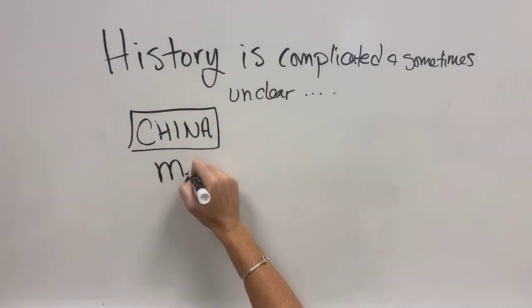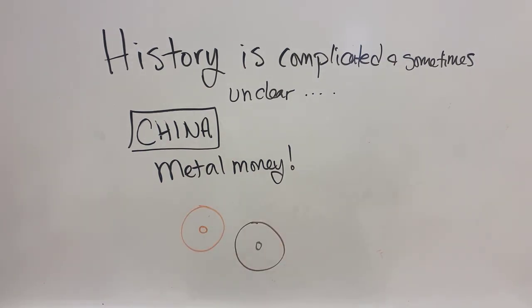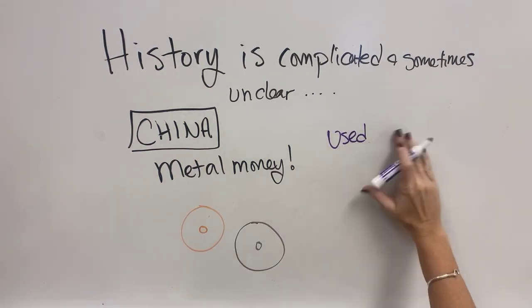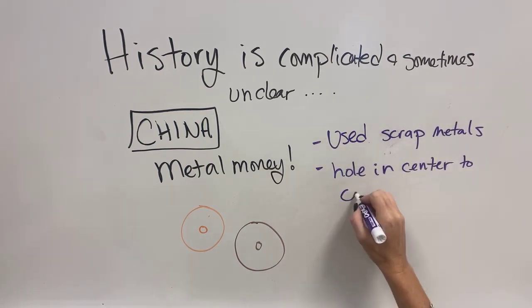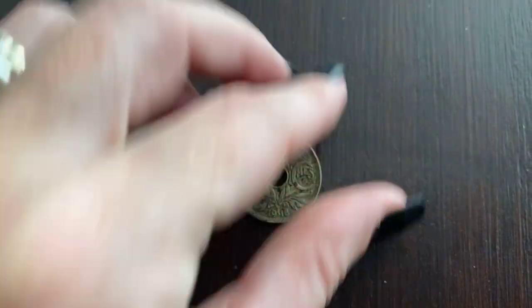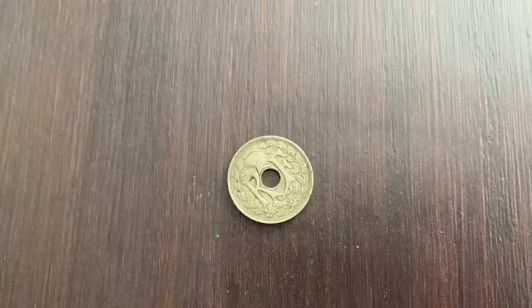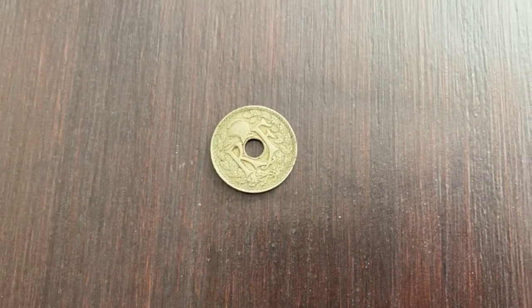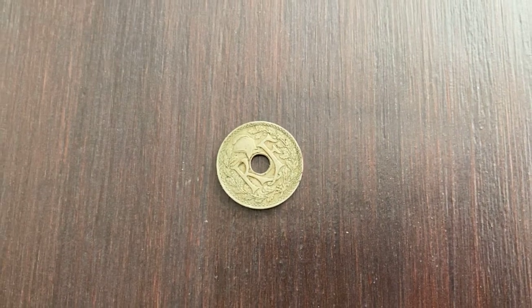Along comes the Chinese, the great innovators, who decided to take their metal that they were able to cast and turn it into money — into coins. They used scrap metals and put a hole in the center so they could carry it just like the shells. Here's a really cool coin I just happened to have; it's from 1918 from France, and you can see it has a hole in the middle, much like the ancient Chinese coins would have, in order to be able to carry it more easily.